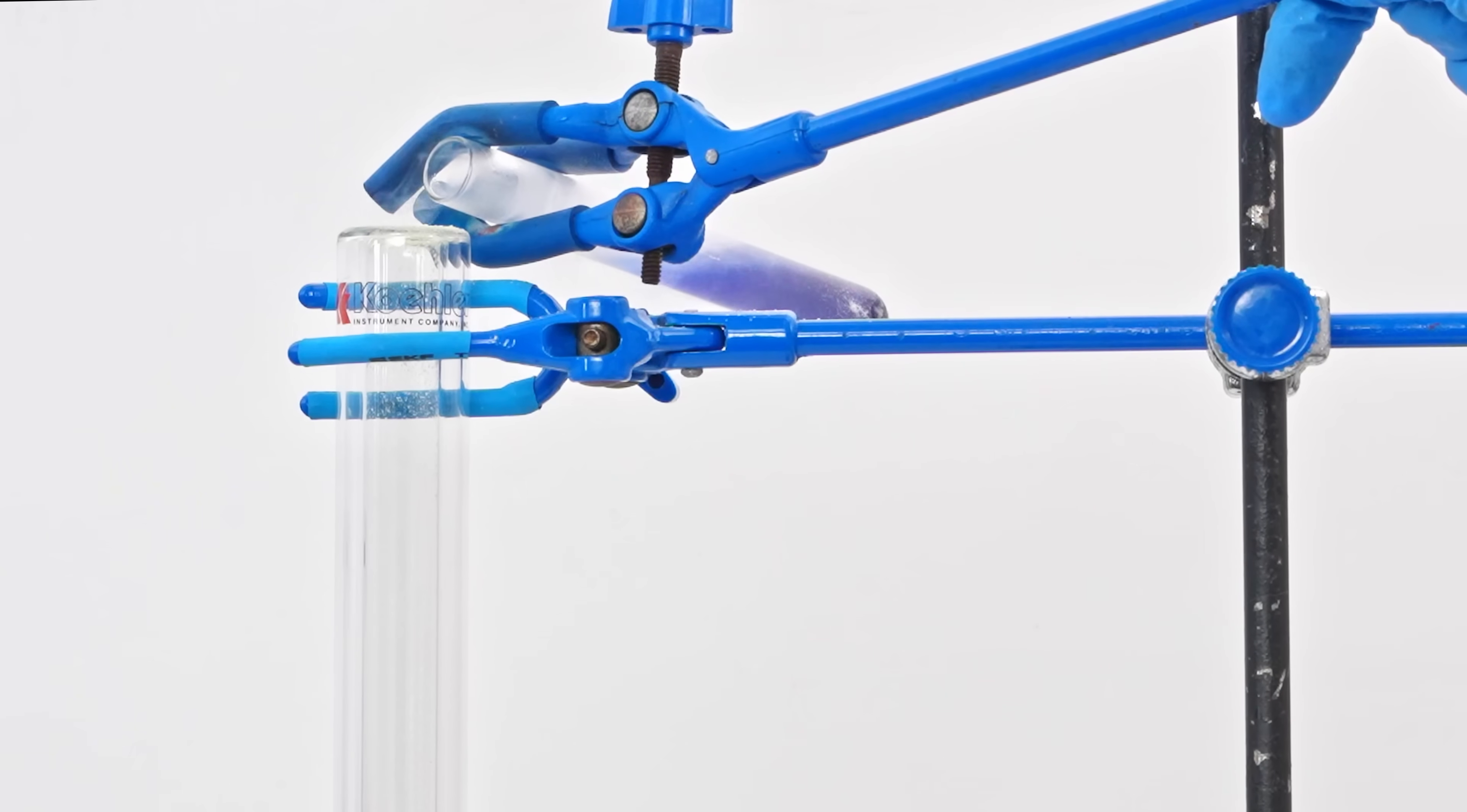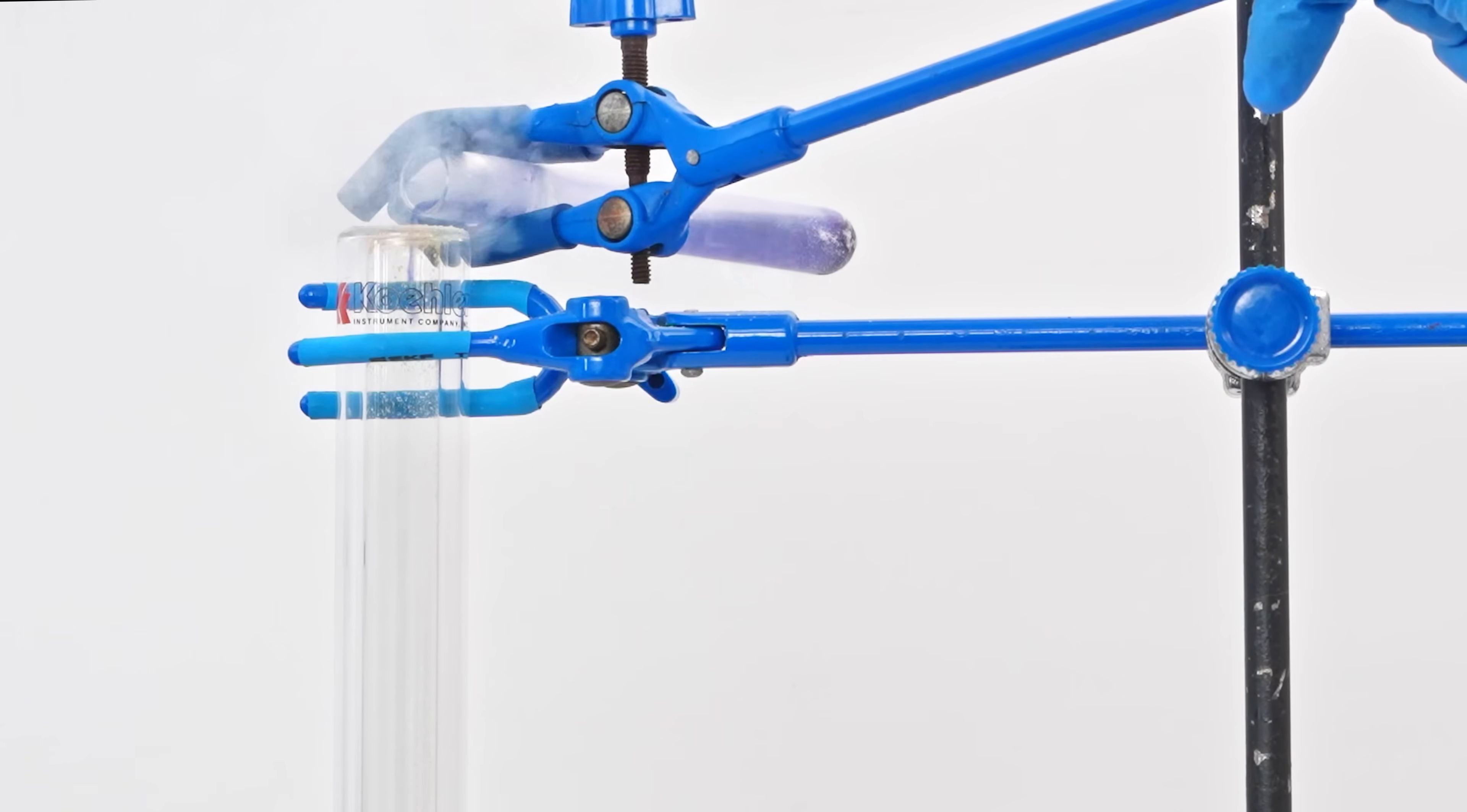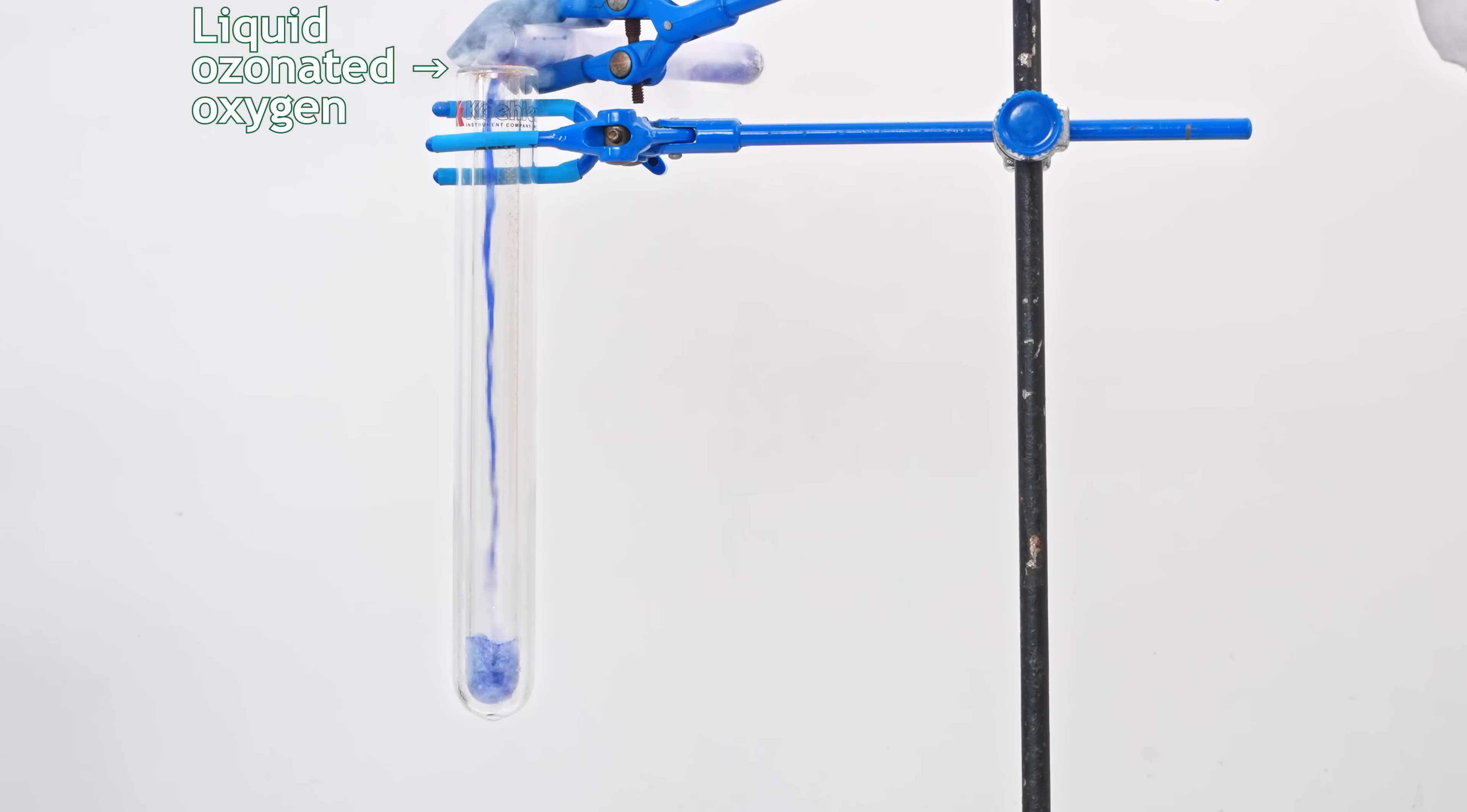For the next experiment, I wanted to concentrate ozone on potassium superoxide, so I used a Dewar test tube. I simply poured some potassium superoxide into the tube and added liquid ozonated oxygen.